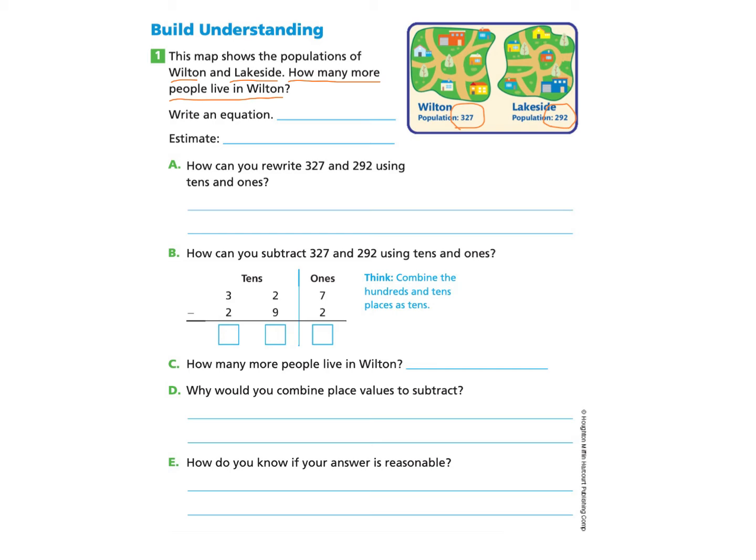So we need to write an equation. If you would like to pause and try this on your own, you can do so. But we're going to start by writing the population of Wilton, which is 327. And we're trying to compare it to Lakeside. So we will be taking away the amount at Lakeside, which is 292.